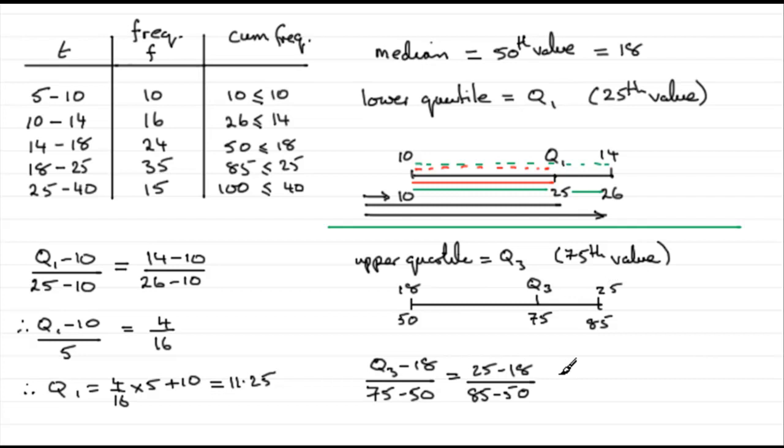Rearrange this for Q3. I'll leave that up to you to do, but you should find that you get Q3 equals 23. All right.